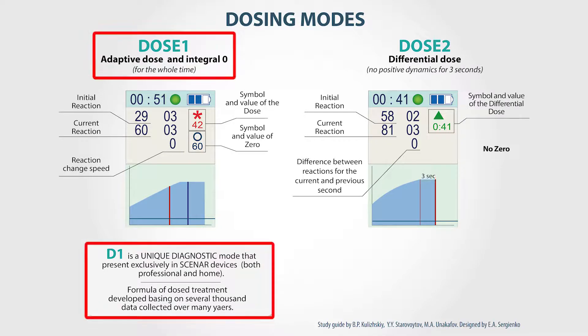Dose 1 is also called an adaptive dose. This is an expert mode. D1 is the universal mode with the visualization of the feedback parameters. It is used for systemic therapy, diagnostics of the functional state, and the so-called minimum sufficiency treatment.